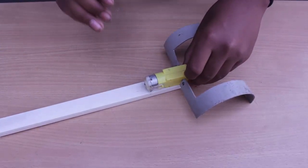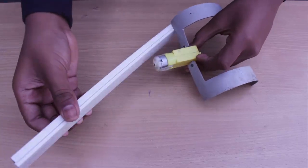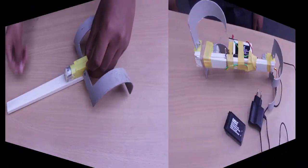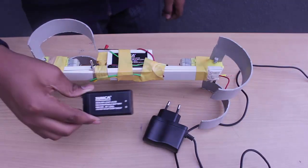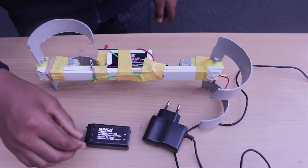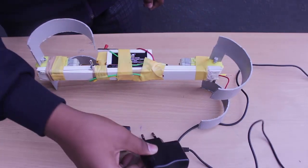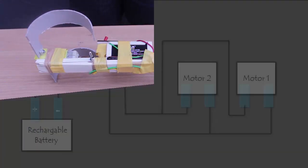The rechargeable battery and the switch will be taped in the middle of the batten. This battery can be recharged using a mobile charger. The circuit is shown in this diagram and it is simple to rig up.